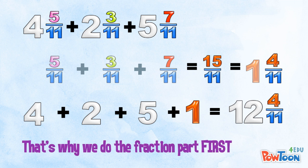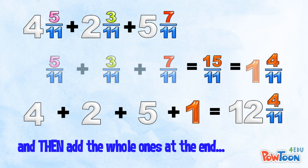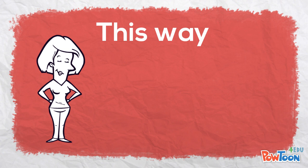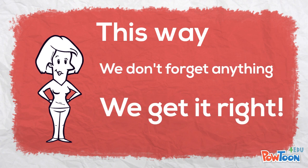That's why we do the fraction part first, and then we add the whole ones at the end, in case of mixed numbers. This way, we don't forget anything. This way, we get it right.